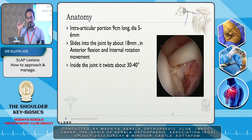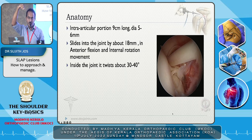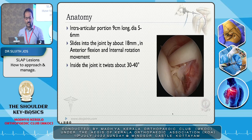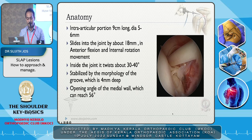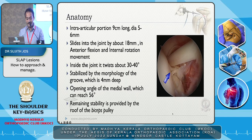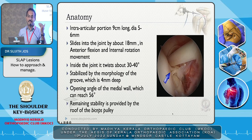The intra-articular portion is around 9 cm long and the diameter is around 5 to 6 mm — that is what Dr. Ayipan was using for the DAS technique, where you cut the biceps on top and reattach to the anterior part, giving anterior support similar to interval closure. It slides into the joint by about 18 mm when the shoulder moves through flexion and internal rotation, and twists about 30 to 40 degrees. The opening angle of the middle ball can reach up to 56 degrees, and remaining stability is provided by the biceps pulley. Whenever you see a subscapularis tear, always think the biceps pulley is affected — consider either a tenotomy or tenodesis.